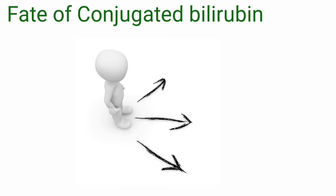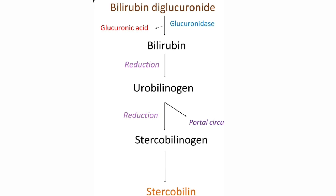Fate of conjugated bilirubin in the intestine. Through bile, conjugated bilirubin enters the intestine where it is acted upon by intestinal bacteria. In the first step, bacterial glucuronidase removes the polar glucuronic acid from conjugated bilirubin to form free bilirubin. This free bilirubin is further reduced to a colorless tetrapyrrole called urobilinogen.